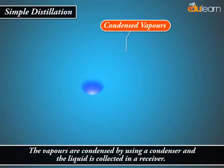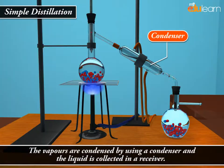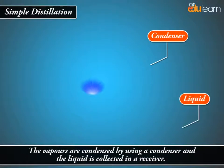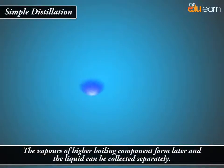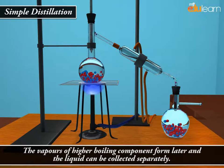The vapors are condensed by using a condenser and the liquid is collected in a receiver. The vapors of higher boiling component form later and the liquid can be collected separately.